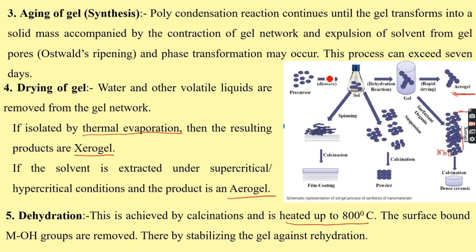Even by spinning or dipping followed by calcination at 800°C, we can obtain film coatings of nanomaterial or dense ceramic forms.